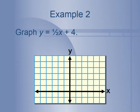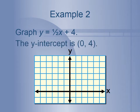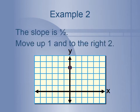Let's do an example. We want to graph y equals one-half x plus 4. First, plot the y-intercept, which is (0, 4). Since x is 0, we don't go left or right, but we go up 4 — 1, 2, 3, 4 — and that's our point. Then we use our slope of one-half. Slope is rise over run, so from this y-intercept we rise 1, and since the denominator is 2, we run 2 — moving to the right 2. So up 1, right 2, and we get another point on the graph.